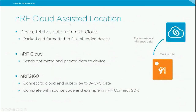The nRF Cloud assisted location solution works by the device sending some data to the cloud, which then sends ephemeris and almanac data back in a packed, small format. The application running on the NRF9160 pushes this data into the modem, which uses it to resolve location. This is available today in our SDK with complete source code and an example. We also support the SUPL assisted location protocol, though it requires downloading more than double the amount of data and is less efficient than our solution.